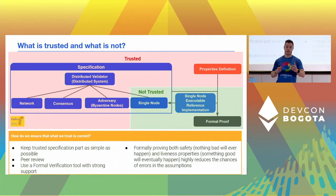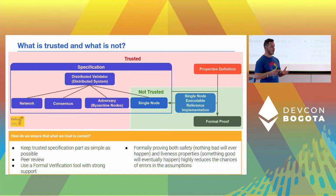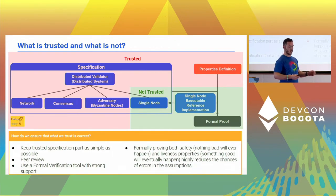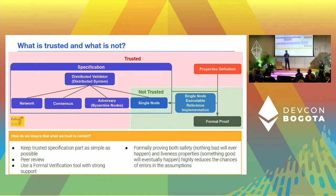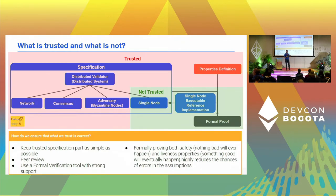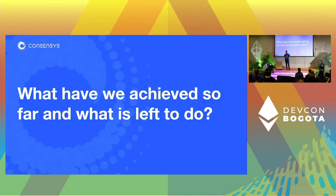There are things one can do to increase confidence that the trusted part is correct: keep the trusted specification as simple as possible, have a peer review. For the tool, it's important to use formal verification tools with good support — we use Dafny, which is very active and bugs get fixed quickly. In distributed systems you typically have two types of properties: safety properties, which say something bad will never happen, and liveness properties, which say something good will eventually happen. Proving that a specification guarantees both significantly increases confidence that the trusted part is correct.